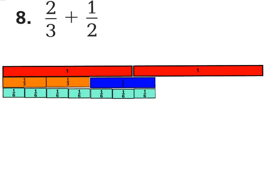I know that 3 and 2 are different denominators, so let's list our multiples of 3: 3, 6. I'm stopping at 6 because I know if I count by 2's I'll get to 6 quickly — 2, 4, 6. So I went ahead and grabbed fraction pieces with a denominator of 6.